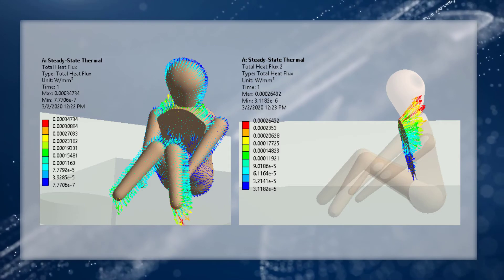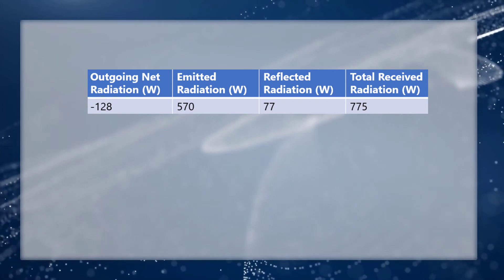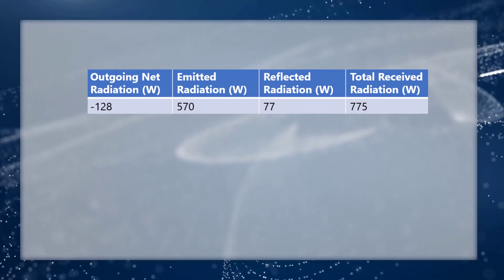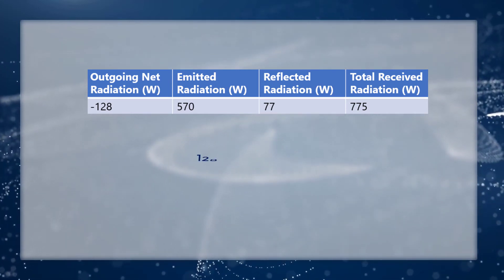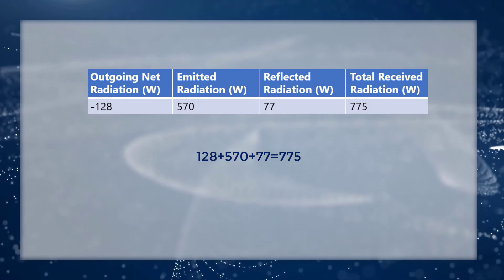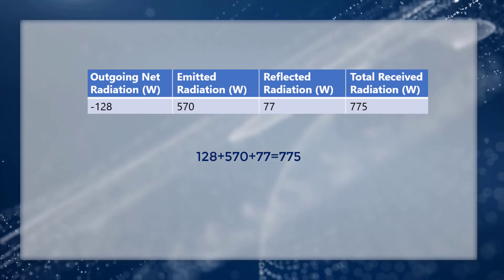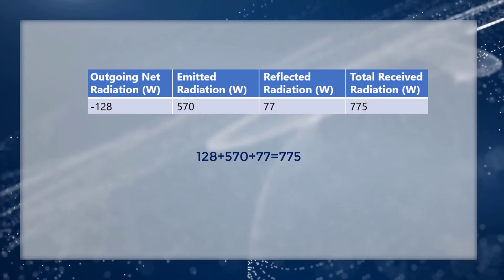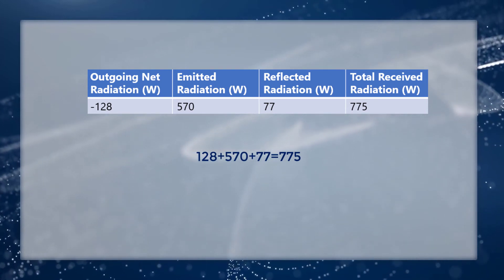Another useful output we can get is the radiation probe on the person. It provides us four components: outgoing net radiation, emitted radiation, reflected radiation, and total received radiation. And we can do a quick calculation here and find out that the total received radiation rate is higher than the reflected plus emitted radiation rate. And the remaining radiation heat flow rate is 128 watts, which equals the negative of the outgoing net radiation.